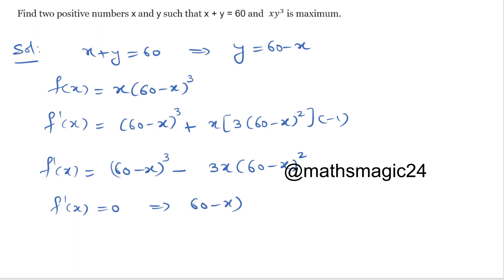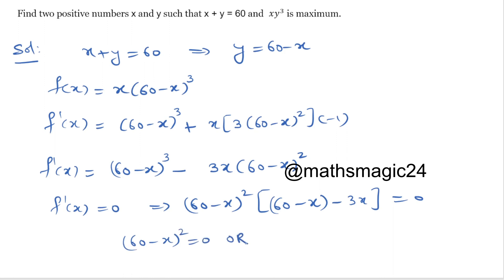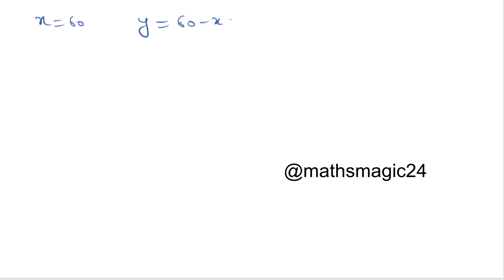Setting f'(x) equal to 0, we factor out (60 minus x)² to get (60 minus x)² times (60 minus x minus 3x) equals 0. This gives either (60 minus x)² equals 0, so x equals 60, or 60 minus 4x equals 0, so x equals 15. When x equals 60, y becomes 0, so x cannot be 60. When x equals 15, y equals 60 minus 15, which is 45.